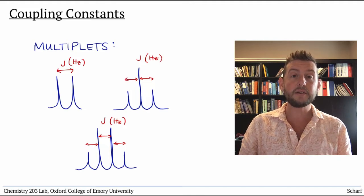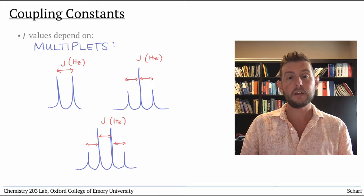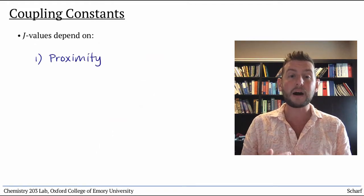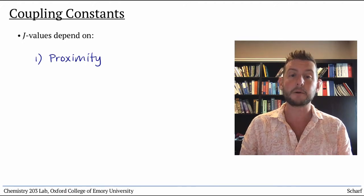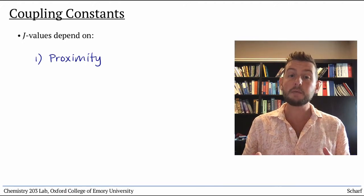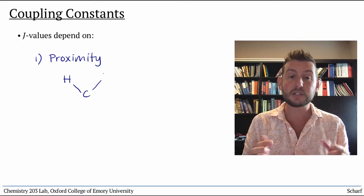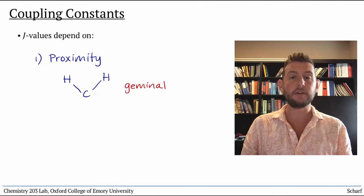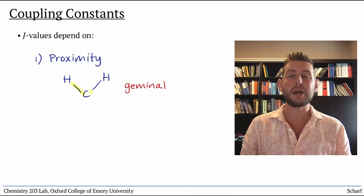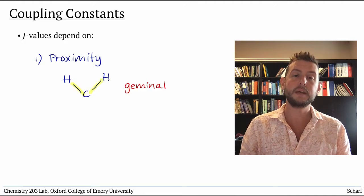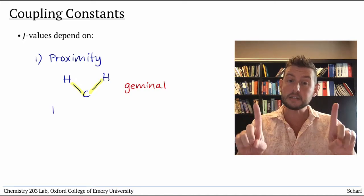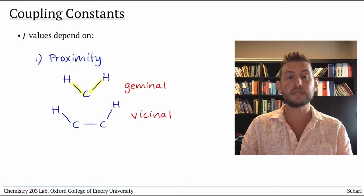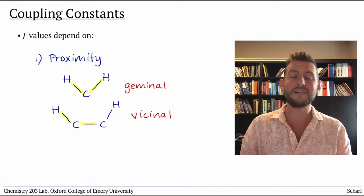J values depend on a number of factors. First, they depend on proximity, the number of bonds between an observed proton and its neighbor. Two protons that are attached to the same carbon are separated by two bonds and are called geminal, like the zodiac sign Gemini for twins. Protons on adjacent carbons are separated by three bonds and are called vicinal, from the same etymological root as the word vicinity.